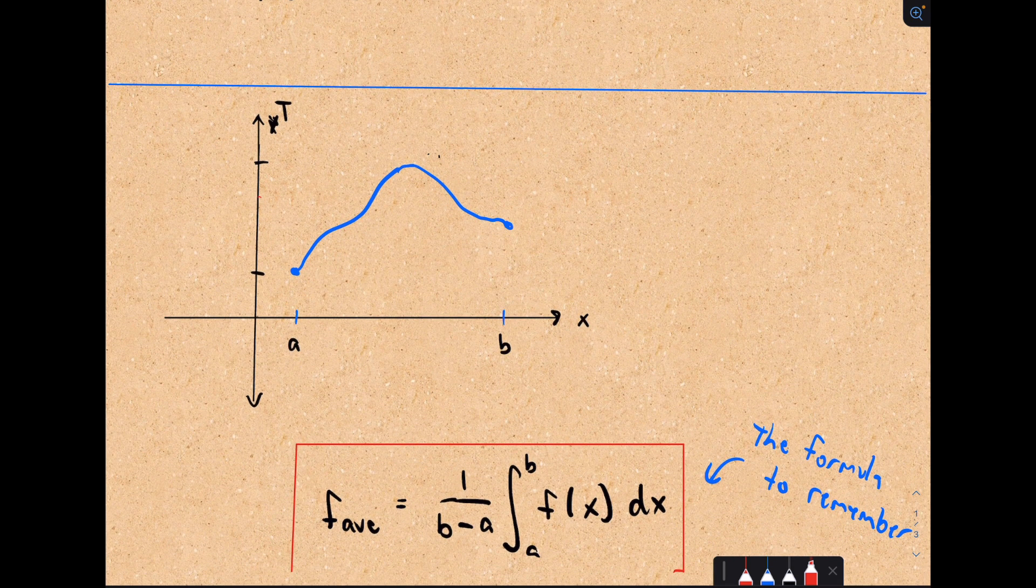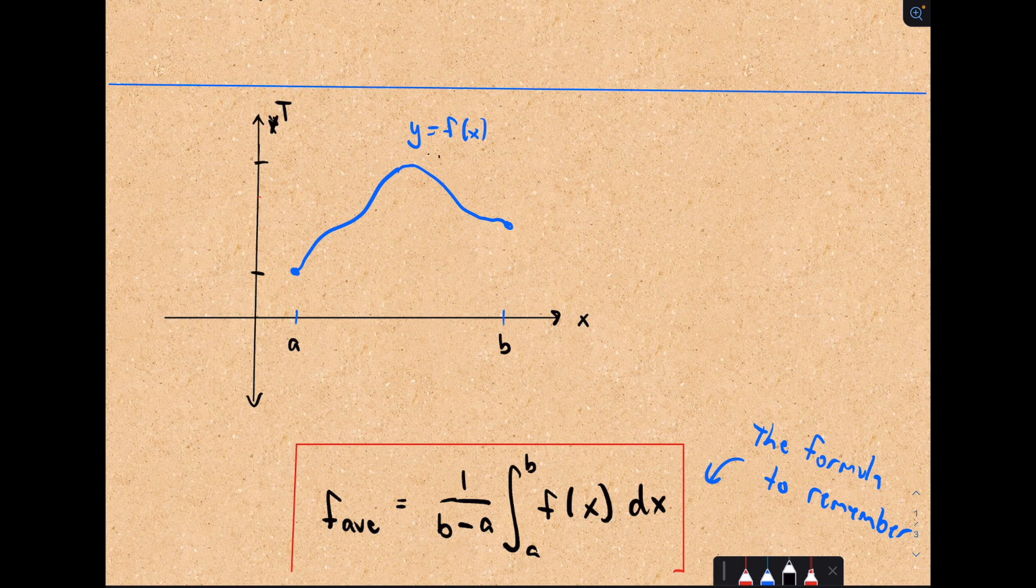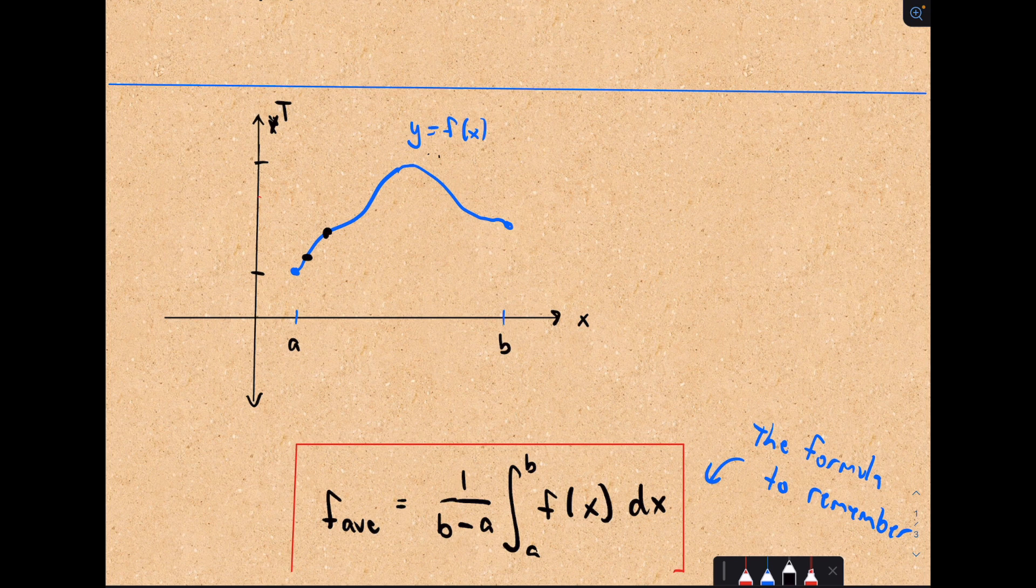We've got a continuous function that we want to find the average value of. The problem is we've got infinitely many values. If we had finitely many values we would just add up the number of values and then divide by the total number and that would give us our average.